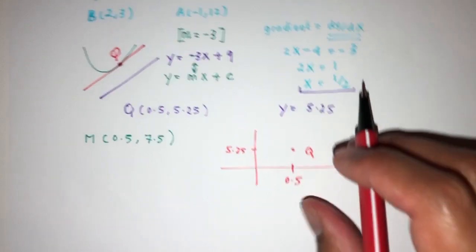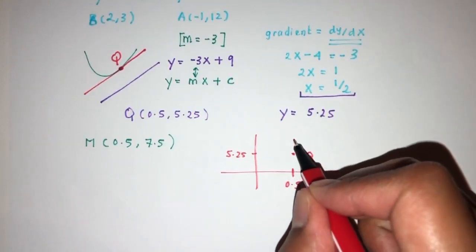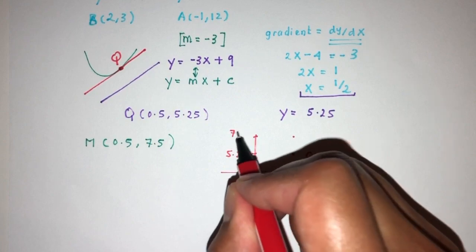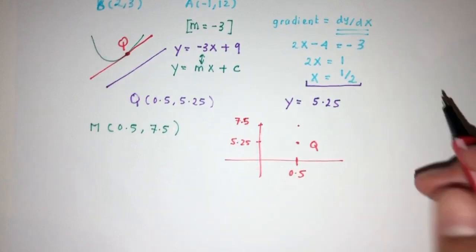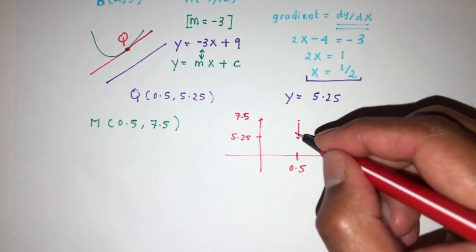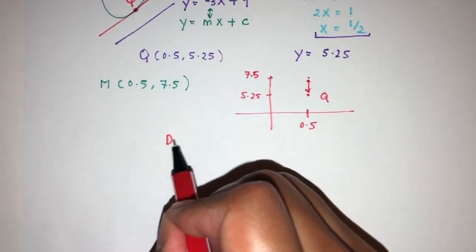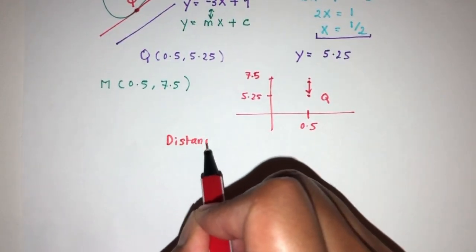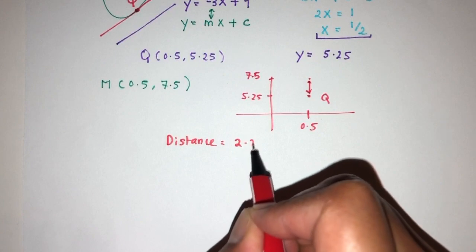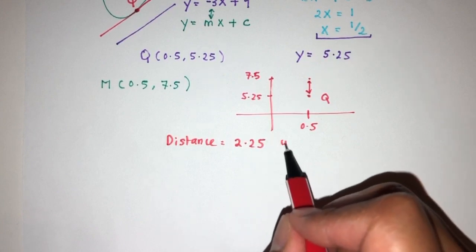7.5 will be vertically upwards here at 7.5. So what is the distance? It will be this difference. The distance will be 7.5 minus 5.25, which should be 2.25. Distance will be 2.25 units, obviously.